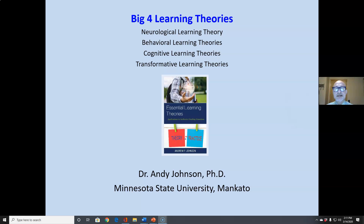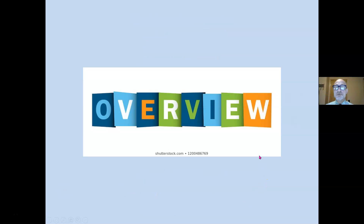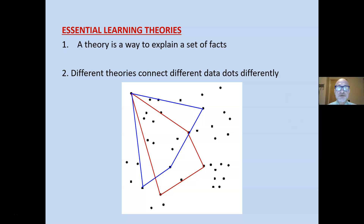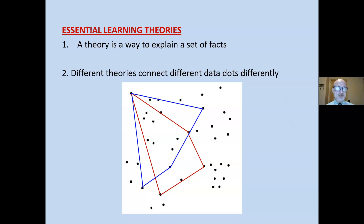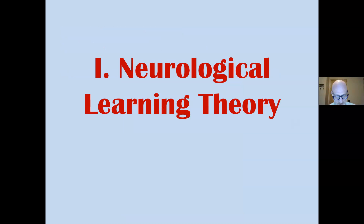This video gives an overview of the four big learning theories, and we will go through each one. But first, what is a theory? It's a way to explain a set of facts, and there are different theories that connect and explain different data points differently. Every theory is a little bit right and a little bit wrong. There's no such thing as the perfect theory.